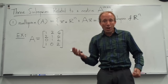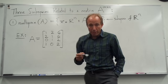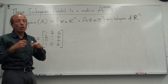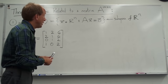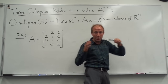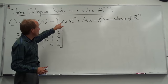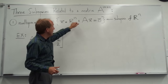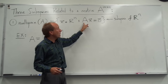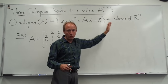One of them we've already talked about earlier in this material, which is the null space of the matrix. We showed that it was in fact a subspace of R^n, where n is the number of columns in the matrix. It's just the set of vectors in R^n that, when you apply the matrix to them, you get zero — so Ax equals zero.